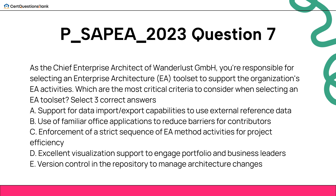As the Chief Enterprise Architect of Wanderlust GmbH, you're responsible for selecting an Enterprise Architecture (EA) toolset to support the organization's EA activities. Which are the most critical criteria to consider when selecting an EA toolset? Select three correct answers. A. Support for data import/export capabilities to use external reference data. B. Use of familiar office applications to reduce barriers for contributors. C. Enforcement of a strict sequence of EA method activities for project efficiency. D. Excellent visualization support to engage portfolio and business leaders. E. Version control in the repository to manage architecture changes.